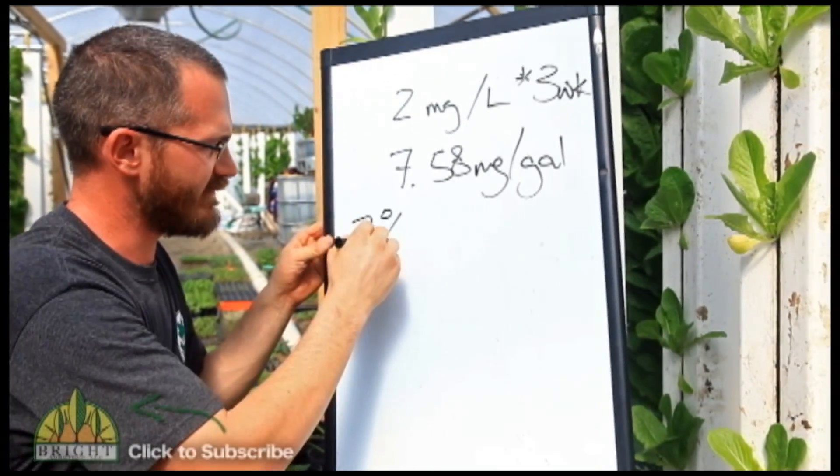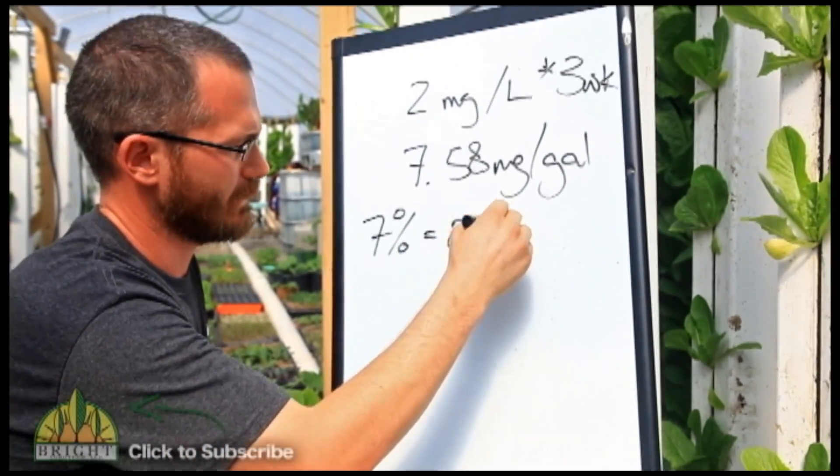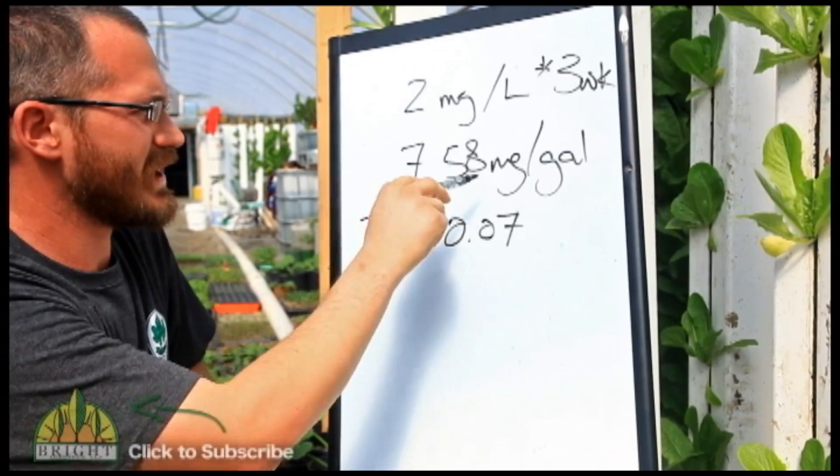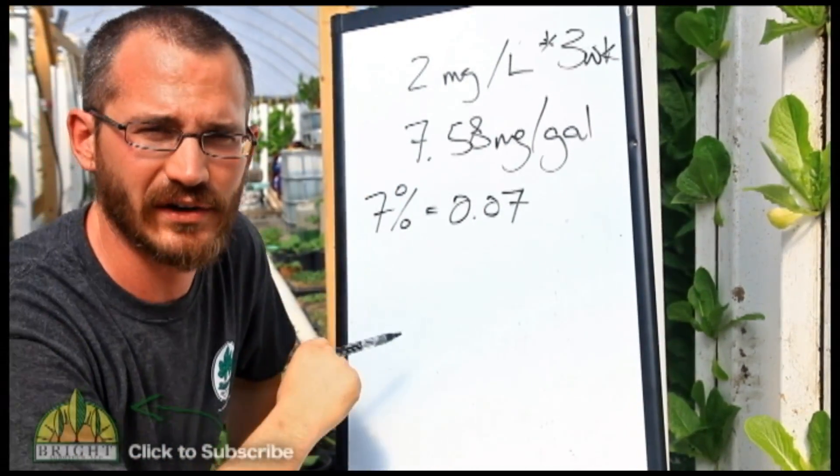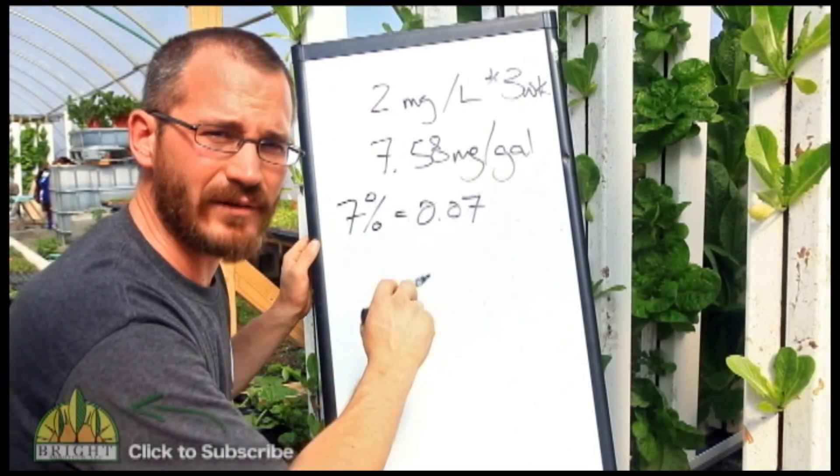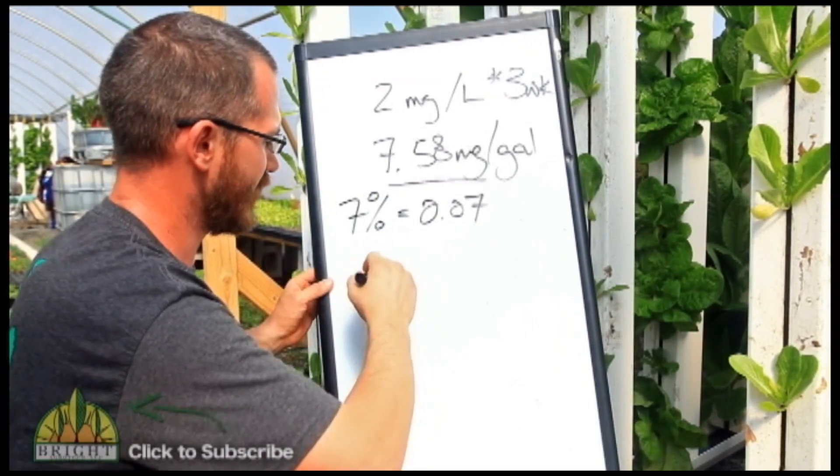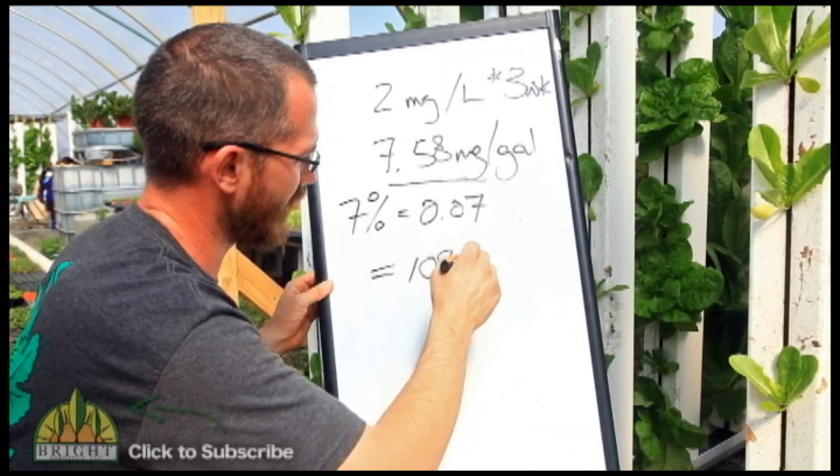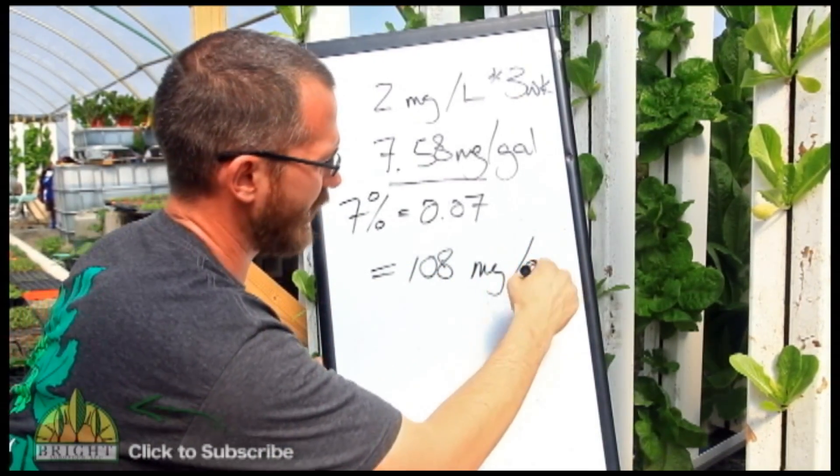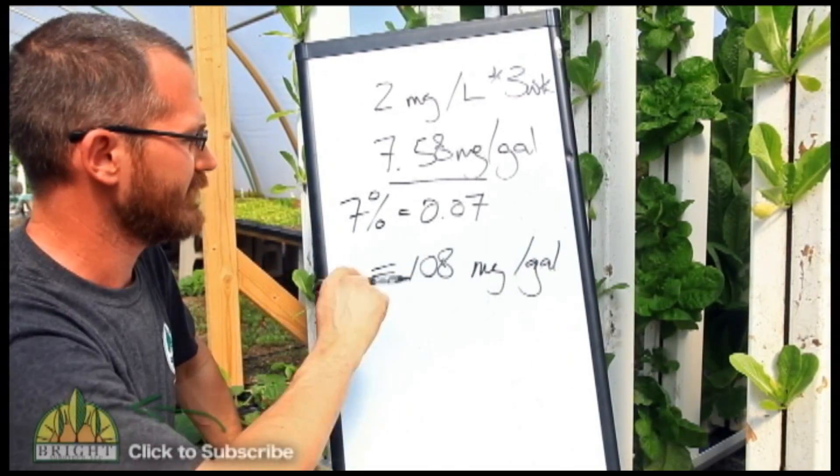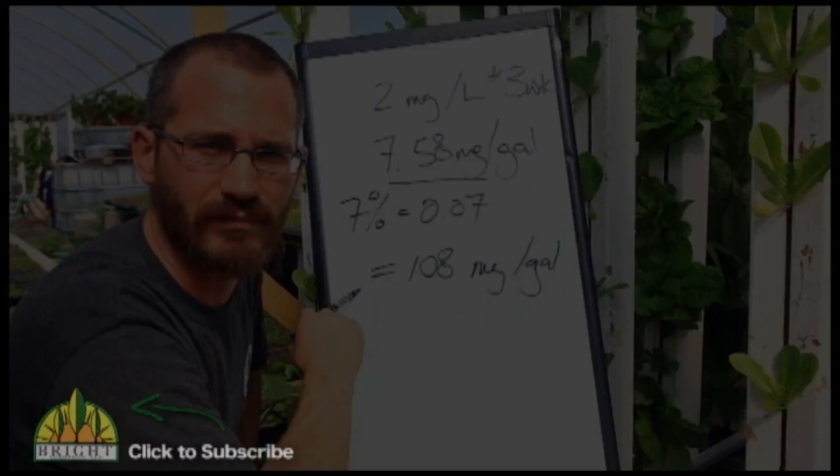So if we assume that we've got 7 percent iron in our system, we need to basically figure out how to get 7.58 milligrams of pure iron per gallon. So to do that, we're basically going to divide 7.58 by 0.07, and that's going to give us roughly 108 milligrams of powder per gallon of water to get essentially 7.58 milligrams of pure iron per gallon.